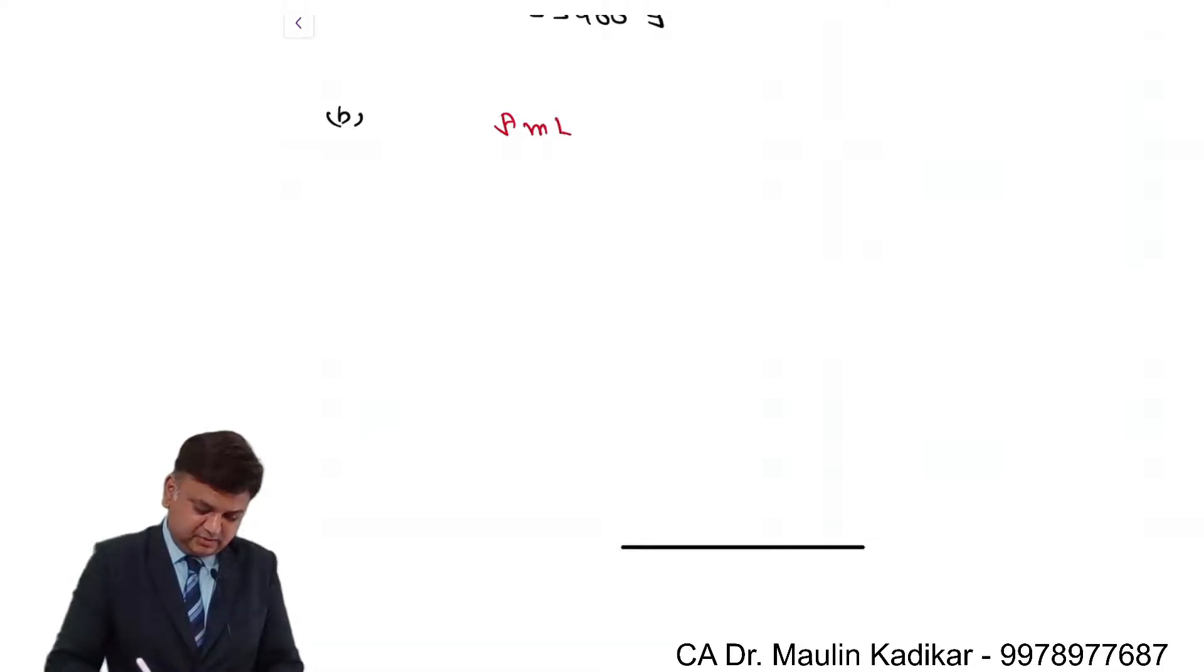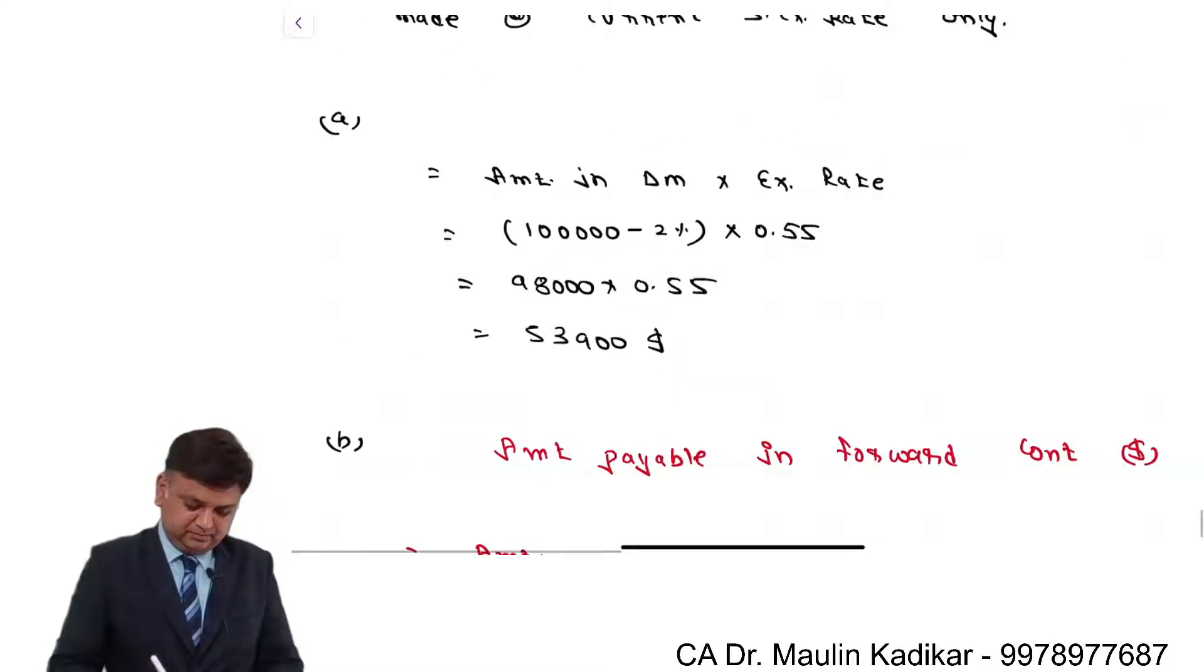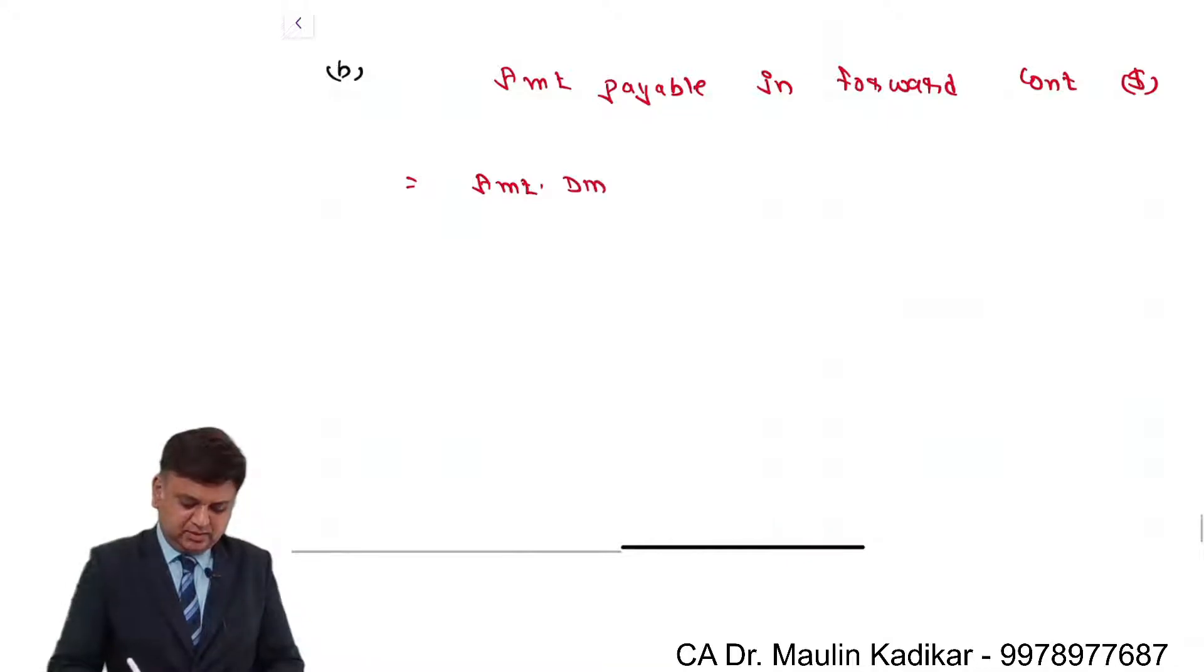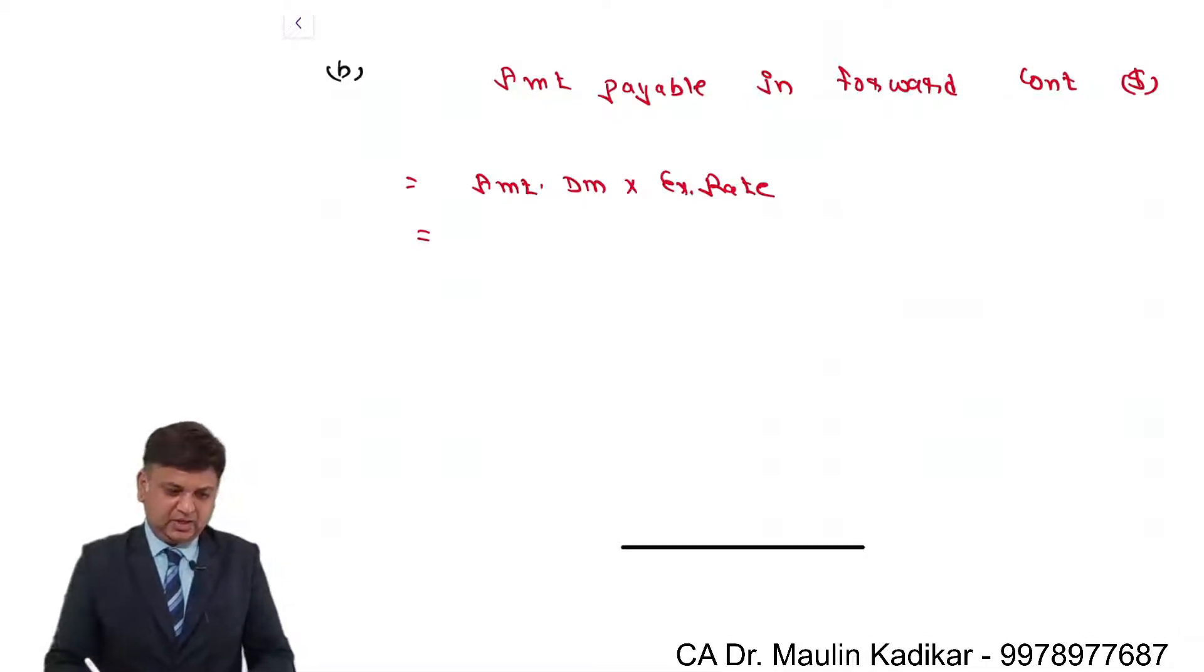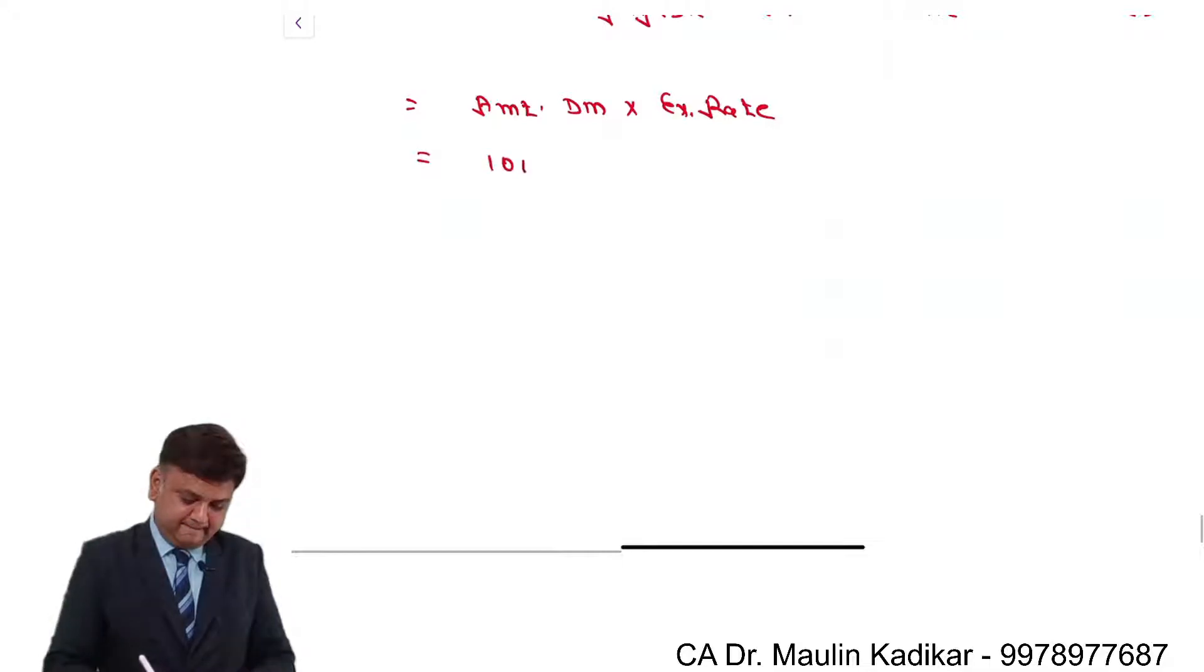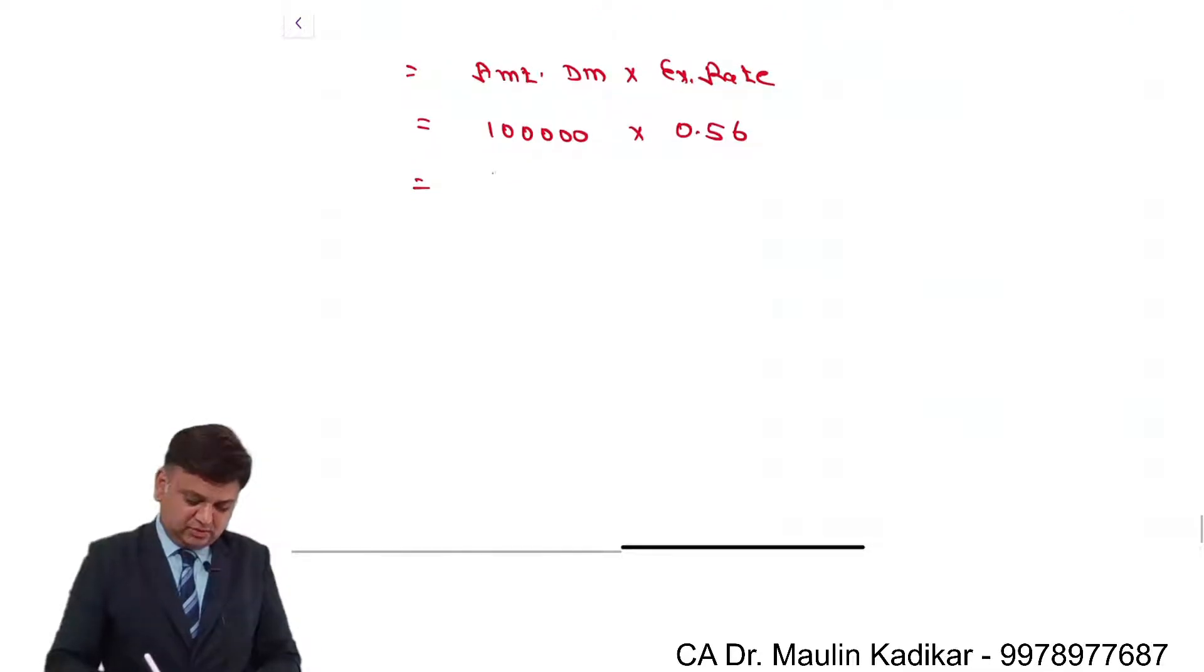Amount payable in forward contract - in that amount, very precisely it is the dollar currency. In Dutchmark, multiply with exchange rate. Amount in benchmark is 1 lakh into 0.56 dollar per dutchmark. That is 56,000 dollar. This is what we understand.